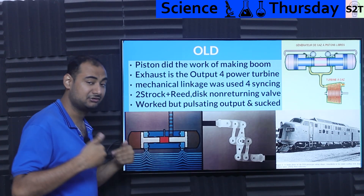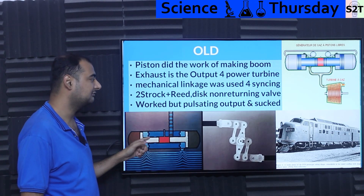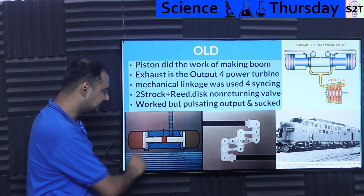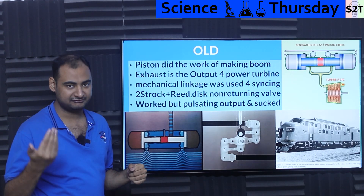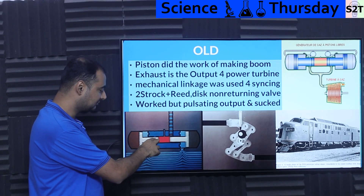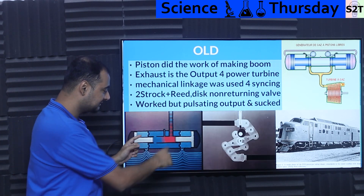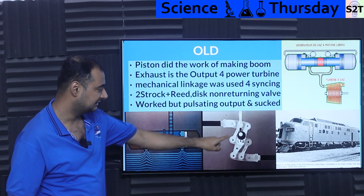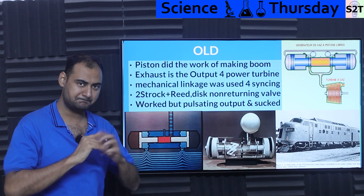After suction, it compresses the air, the reed valve closes, and a disc non-return valve opens, sending air into the chamber. The system is designed so the exhaust port opens first — whoosh, you get your gases. Once most gases escape, the air intake opens for scavenging. Once both ports are closed, fuel injection happens — that's the lobe you see — and then boom.